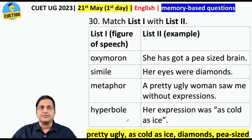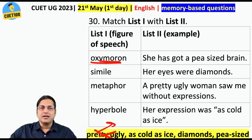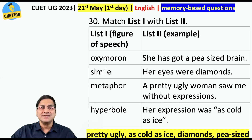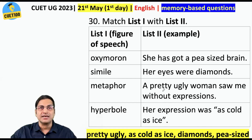One more thing: the oxymoron example 'pretty ugly' is actually incorrect, because some moron created this question. 'A pretty ugly woman' — here 'pretty' does not mean beautiful; it means 'considerably ugly.' Don't we say 'that is pretty clear to me' — we don't mean 'beautiful clear.' So this is certainly not an example of oxymoron; it is an erroneous question.